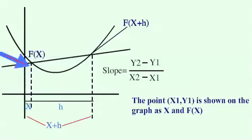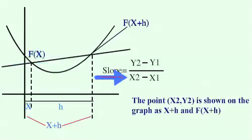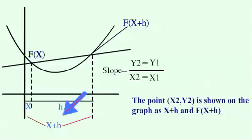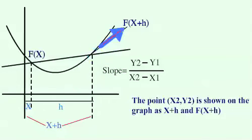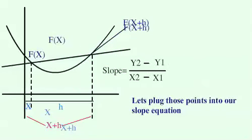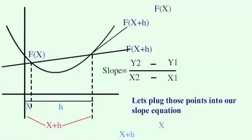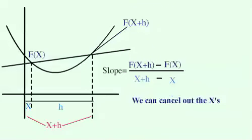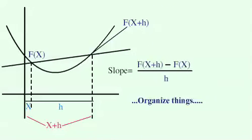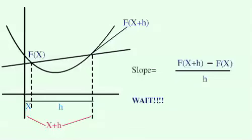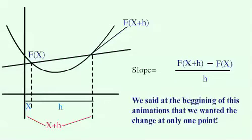The point x2, y2 is shown on the graph as x plus h and f of x plus h. Let's plug those points into our slope equation. Now we cancel out the x's and organize things.